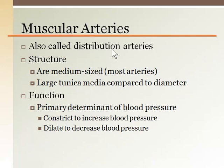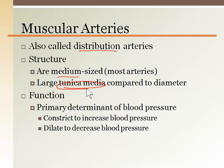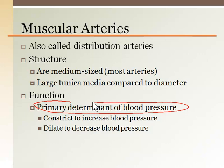Muscular arteries are also called distribution arteries because they branch off to different organs of the body. They have a proportionally greater amount of smooth muscle in their tunica media relative to their diameter. Due to their musculature, which can dramatically affect their diameter, it is this class of arteries that plays a role in blood pressure — constriction increases blood pressure and dilation decreases it.